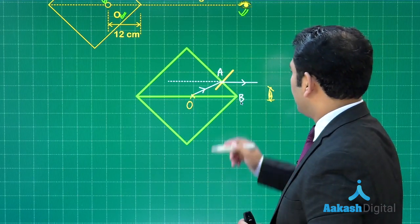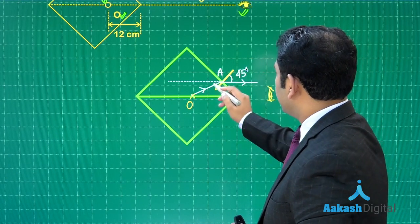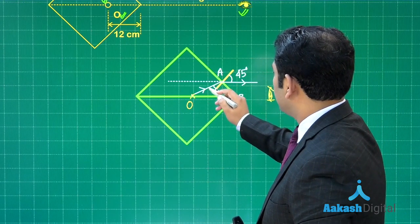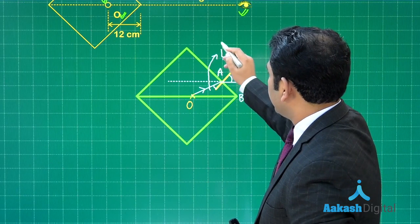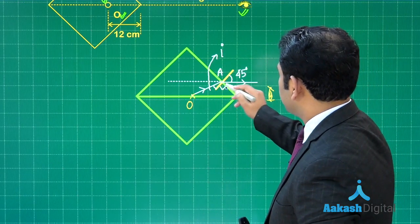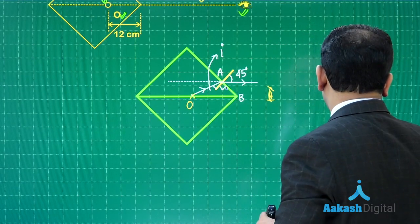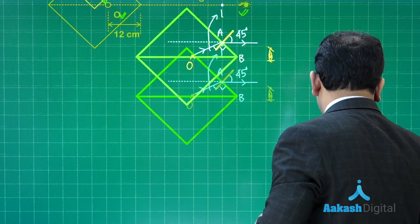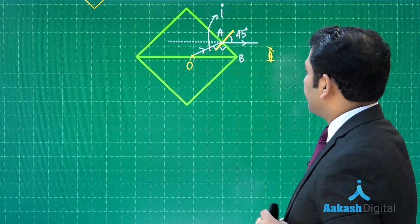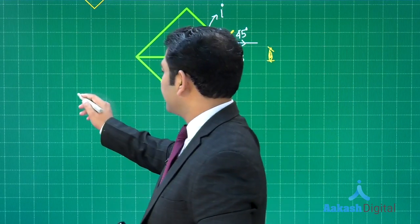You can see this angle is 45 degrees and this particular angle is the angle of incidence i. This is 90 and this is 45, so the rest can be easily managed. First, let us write Snell's law.